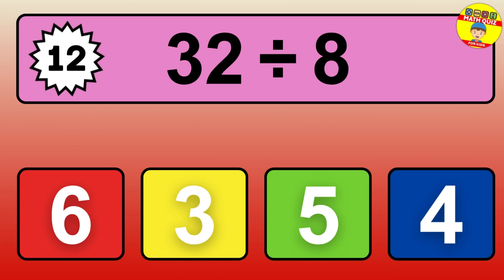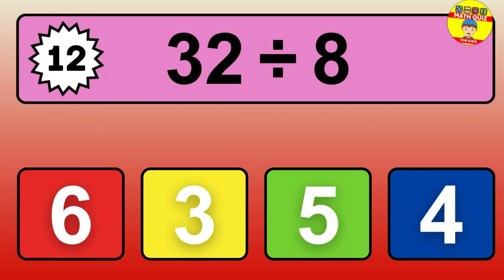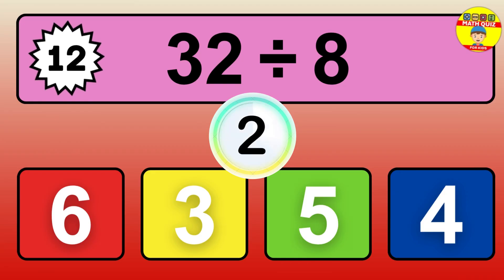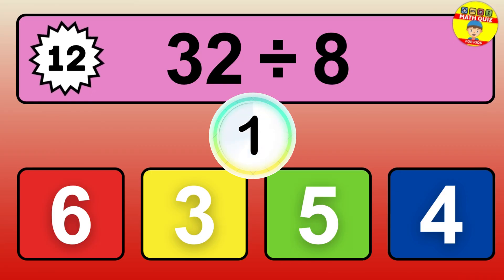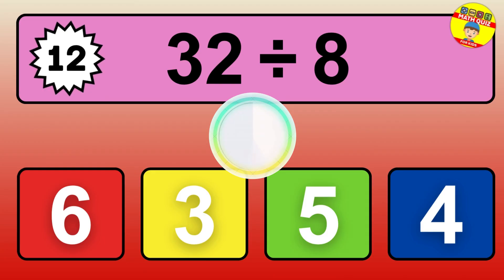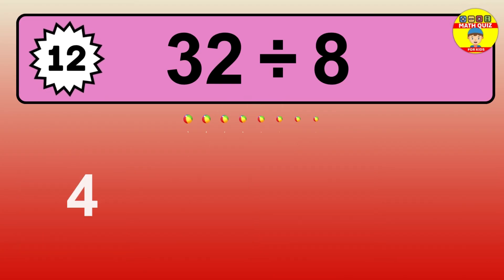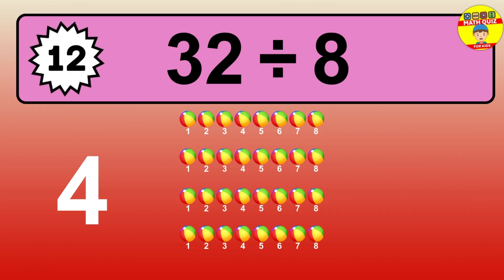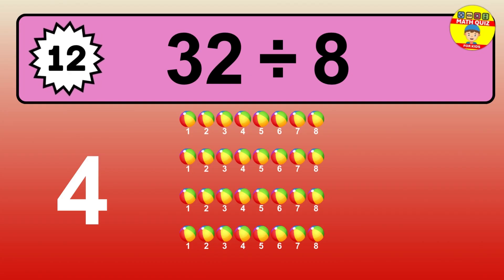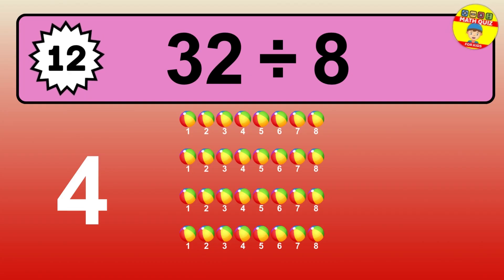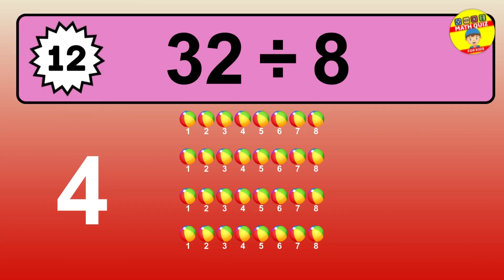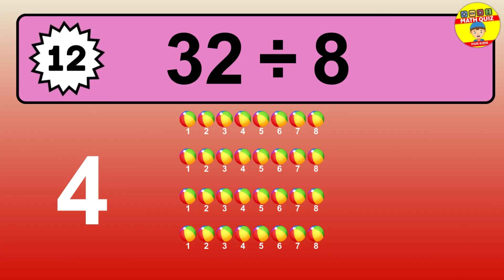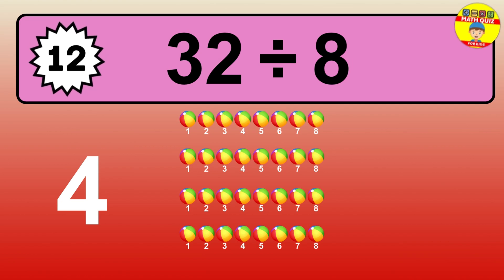30 divided by 6 — time to think. Let's go to the solution. Divide the number 30 by 6. Each group contains 6 units, so dividing 30 by 6 results in 5 equal groups. Thus, the result is 30 divided by 6 equals 5.